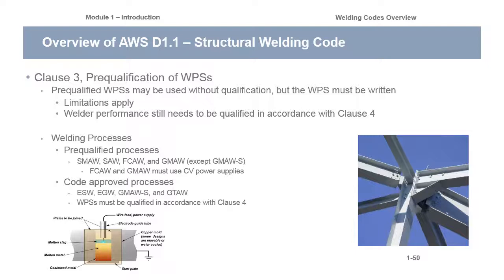If you don't know what you're doing with short arc, you can really get into trouble. Flux core and gas metal arc must use constant voltage power supplies. There are code-approved welding processes such as electro-slag, electro-gas, gas metal arc short-circuiting, and gas tungsten arc welding — you can use these, but you have to qualify the WPS in accordance with Section 4. You'll need to do some tensiles, some bend tests, and write a WPS supported by a PQR, all per Clause 4.